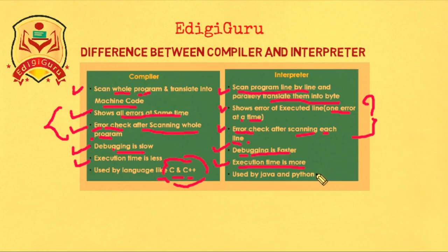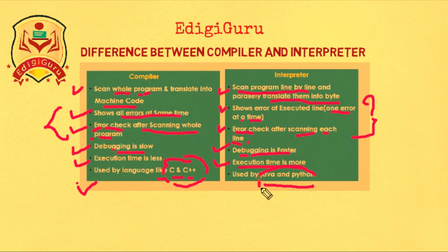Languages like C and C++ use a compiler, whereas languages like Java and Python use an interpreter. In this way, we have seen the difference between compiler and interpreter. I hope you enjoyed this video. If you liked it, don't forget to subscribe to the YouTube channel and hit the bell icon. Thank you for watching.